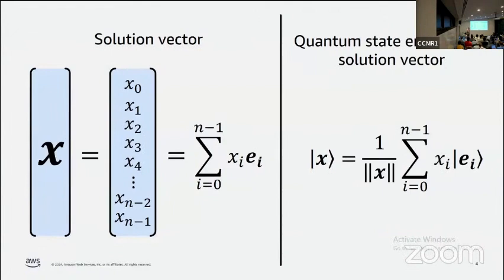The goal is to find the solution vector x which contains these n components. But for the quantum computer, the task is slightly different. We want to create this quantum state |x⟩ which is a superposition over n orthogonal basis states with coefficient proportional to the component xi. We'll assume |x⟩ is normalized, so we divide by the Euclidean norm ||x||, which will play an important role later.